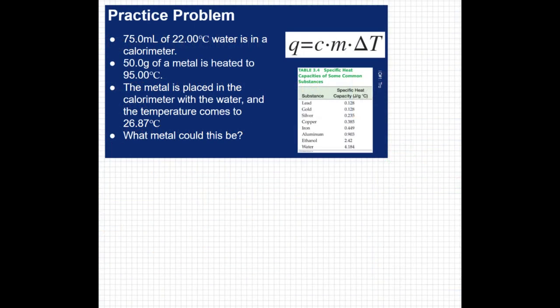The key concept when looking at one of these calorimeter problems is conservation of energy. We have a warm metal placed in room temperature water, and when the process ends they reach thermal equilibrium — meaning they're at the same temperature. The metal gets cooler and cooler, the water gets warmer and warmer, until they reach the same temperature. If energy is conserved, the metal is losing heat — it has a negative Q value — and the water is gaining heat with a positive Q value. The heat lost by the metal must equal the heat gained by the water.